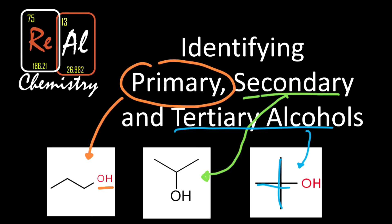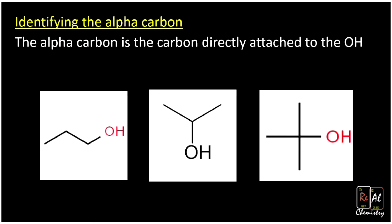If we want to do this in a systematic way, it's really important to identify the alpha carbon. The alpha carbon is just the carbon directly attached to the OH group. Alpha carbons are important in a lot of different organic molecules — it's always the carbon directly attached to the functional group of interest, which in this case is our alcohol group. You'll sometimes see a little alpha symbol by those carbons.